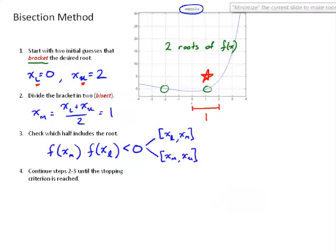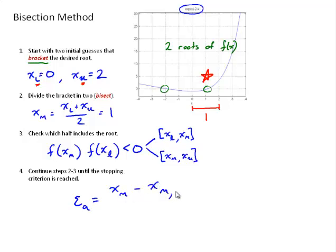We'll continue doing this until the stopping criterion is reached. Recall from the error analysis video that we have to define an approximate relative error. Our approximate relative error would be EA = (xm - previous estimate) / xm. We are going to iterate or continue steps 2 through 3 recalculating the bisection until our absolute value of EA is less than or equal to some stopping criterion.